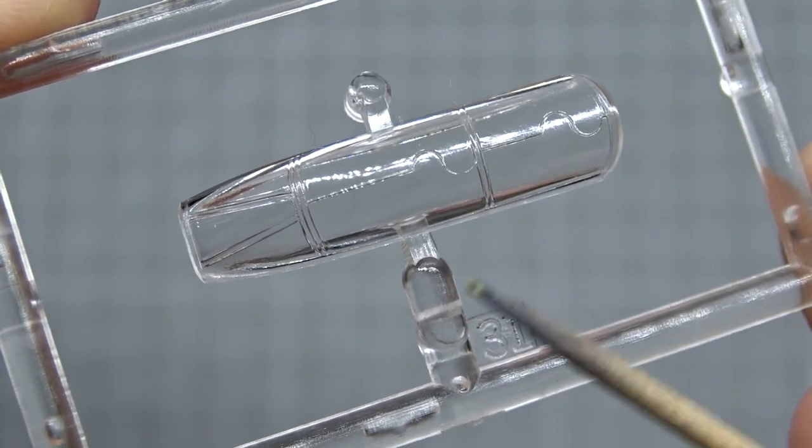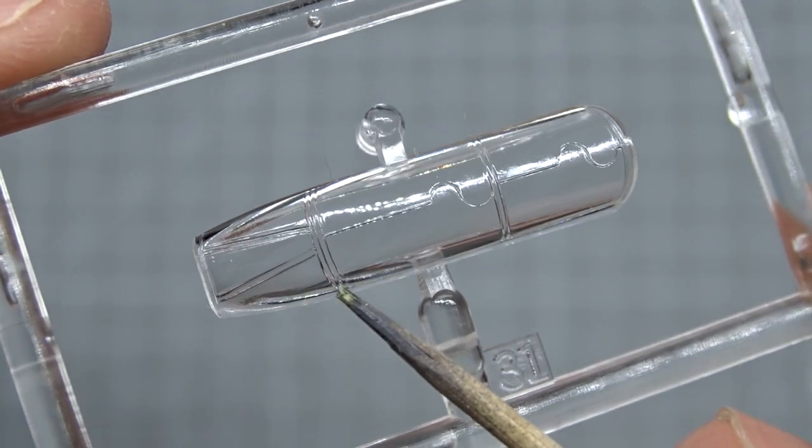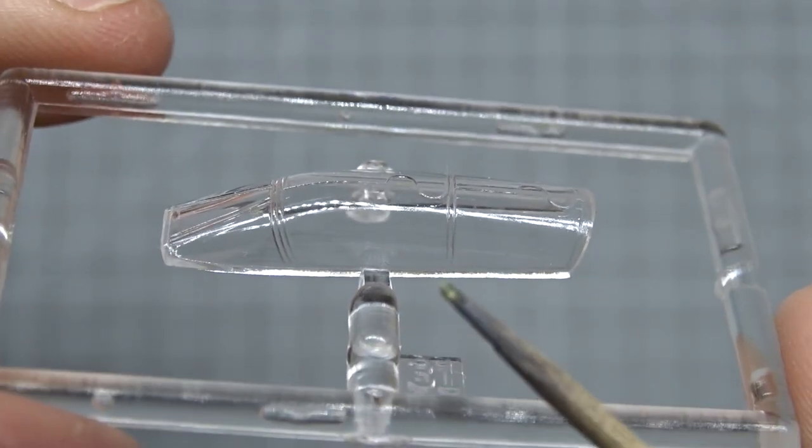What we can see on top of the tornado canopy is not a seam line but the detonation cord to shatter the glass in case the crew has to eject.